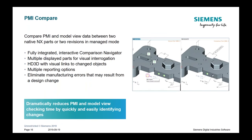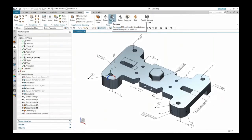There's also a function called PMI Compare that allows you to compare PMI and model view data between two native NX parts or two revisions in a managed mode. It's fully integrated within the application and provides a comparison navigator and visual interrogation with HD3D visual links and tags on your model to quickly identify changes.